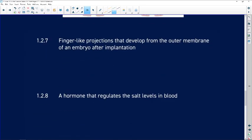Finger-like projections that develop from the outer membrane of an embryo after implantation. So there's our little blastocele with its little hollow ball of cells and here is the endometrium. We're going to see finger-like projections attaching our embryo to the endometrium. What are these finger-like projections?